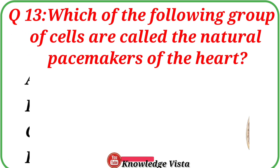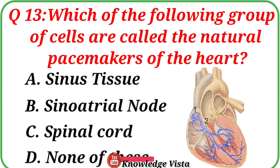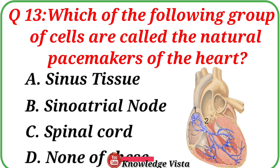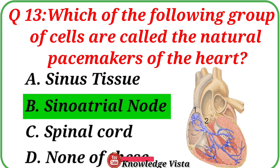Question No. 13. Which of the following group of cells are called the natural pacemakers of the heart? Your options are: A. Sinus tissue, B. Sinoatrial node, C. Spinal cord, D. None of these. Correct answer is option B: Sinoatrial node.